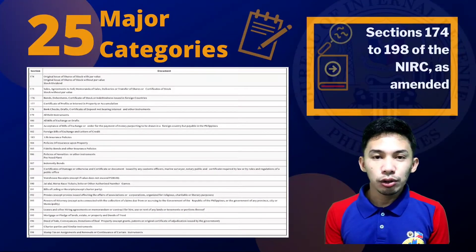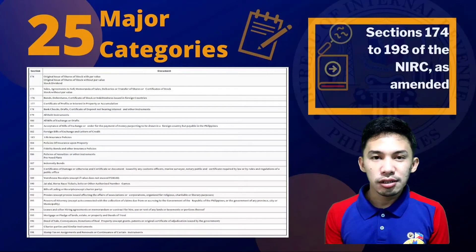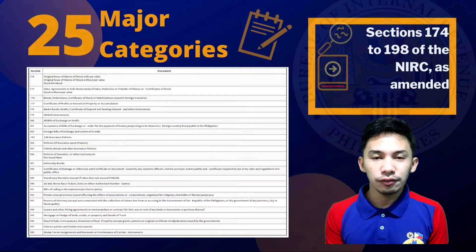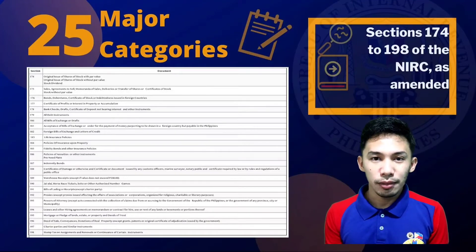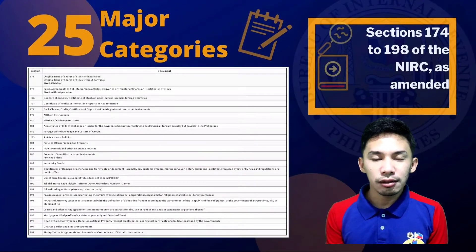Presently, there are 25 major categories of documents, instruments, or transactions which are taxed at varying rates under Sections 174 to 198 of the National Internal Revenue Code, or NIRC, as amended. The latest amendment was brought about by the signing into law of Republic Act No. 10963, otherwise known as the Tax Reform for Acceleration and Inclusion, or TRAIN Law, on January of 2018.